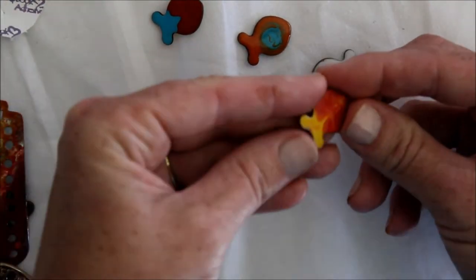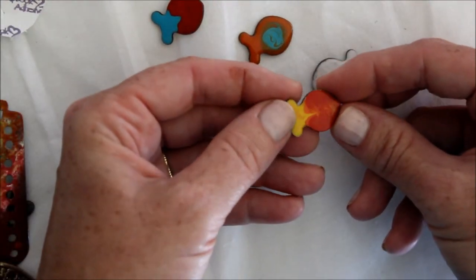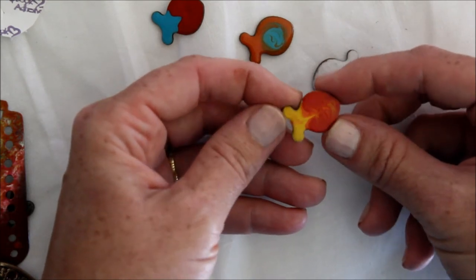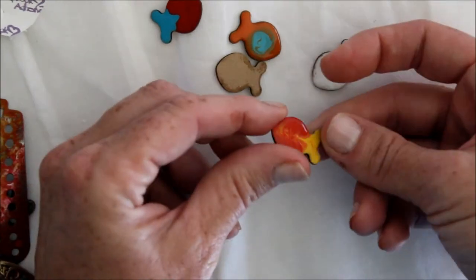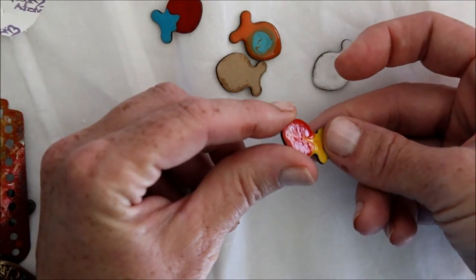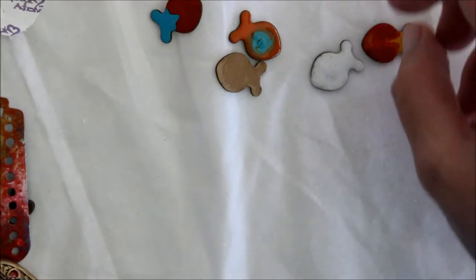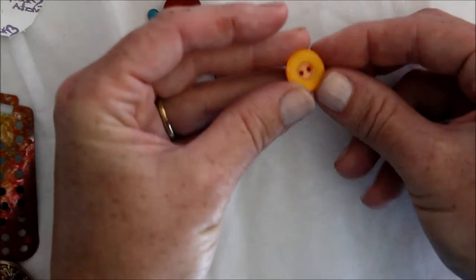And then here is one that I actually put a layer of Glass-tique over the two colors, kind of as a top coat. See, pretty.